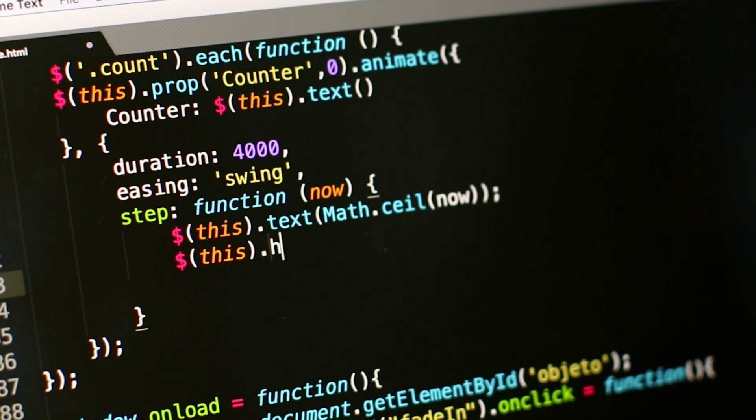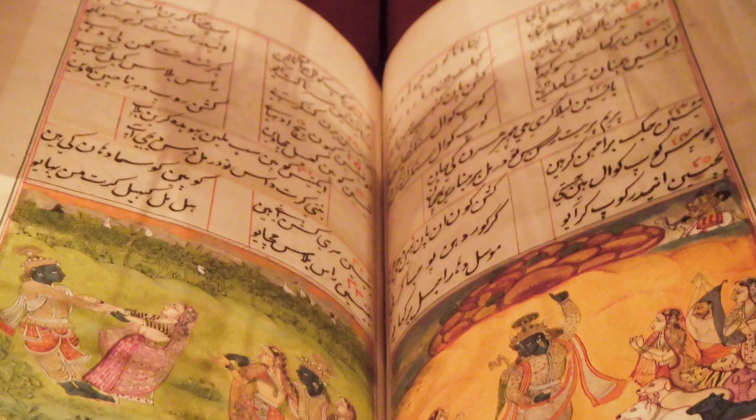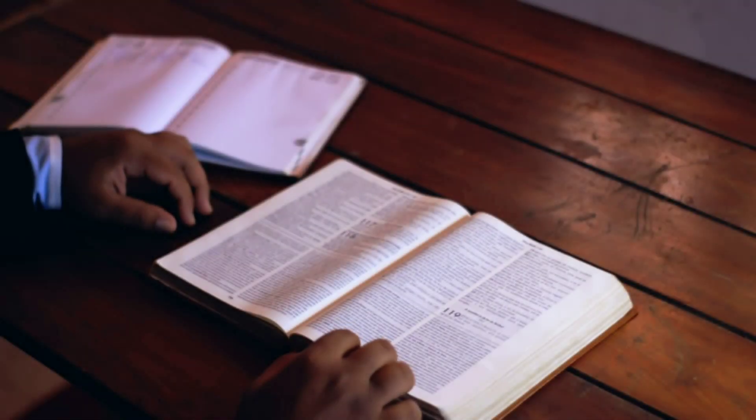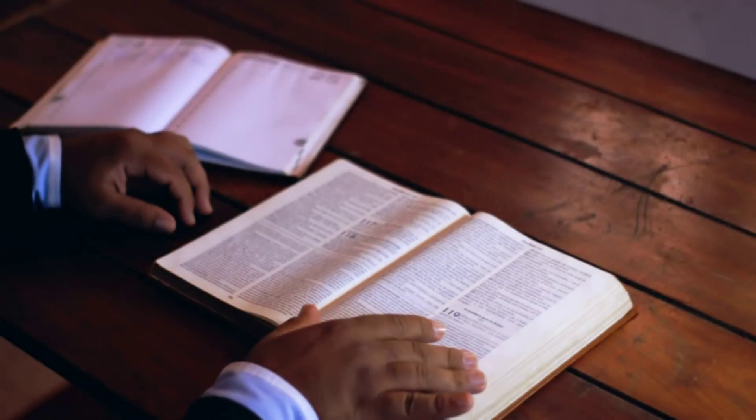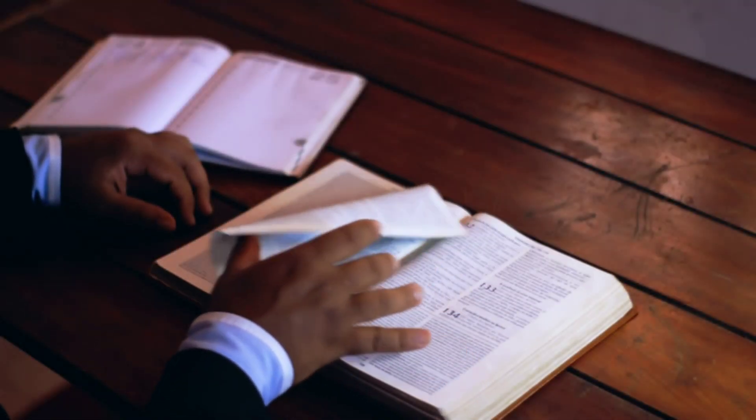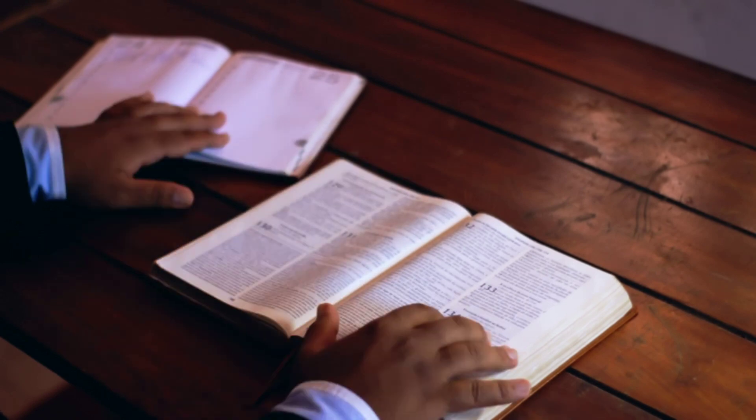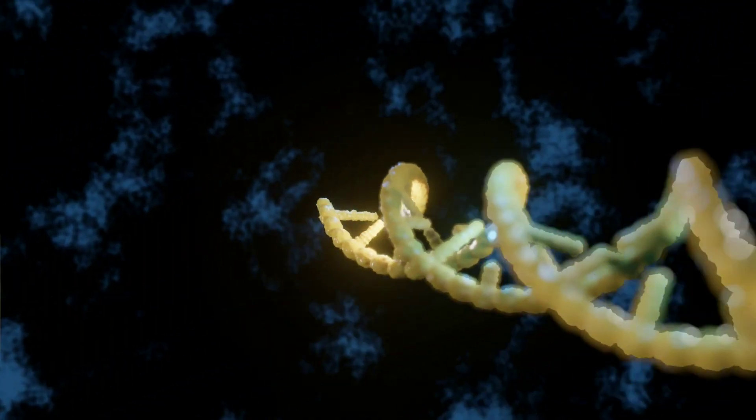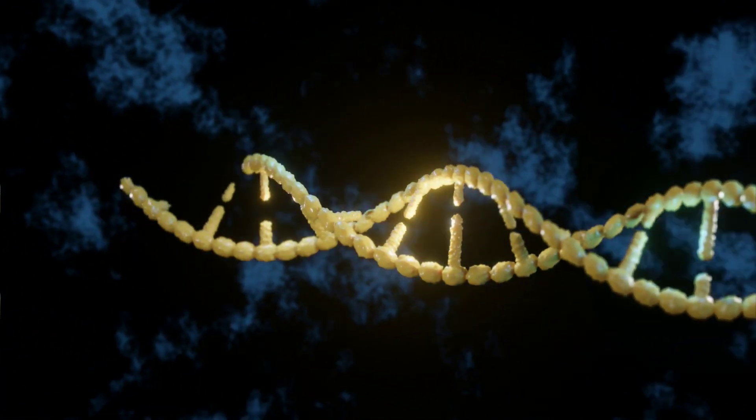Hence it is clear that information must have come from intelligence. For instance, religious scriptures like Bhagavad Gita, Bible, Quran, etc. cannot be written by random arrangements of letters unless there is some intelligence behind it. Information always comes from intelligence, and if the information is extremely complex, then it must have originated from super intelligence.